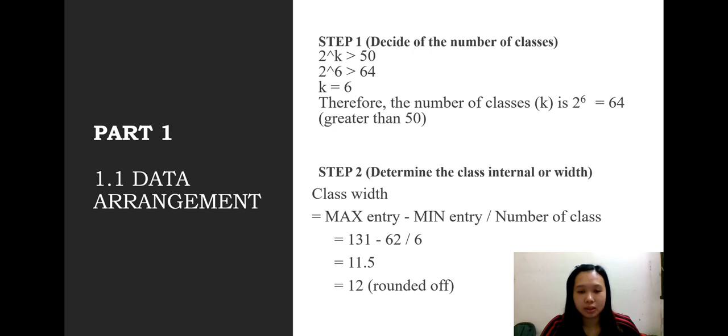Step 1: Decide the number of classes. We get k equals 6, therefore the number of classes is 64, greater than 50. Step 2: Determine the class interval or width. We get total is 11.5, when rounded off is 12.